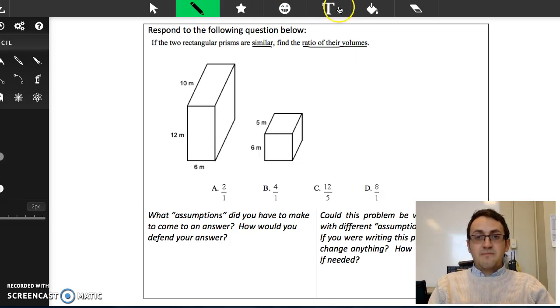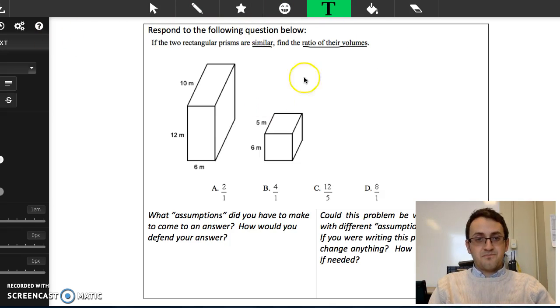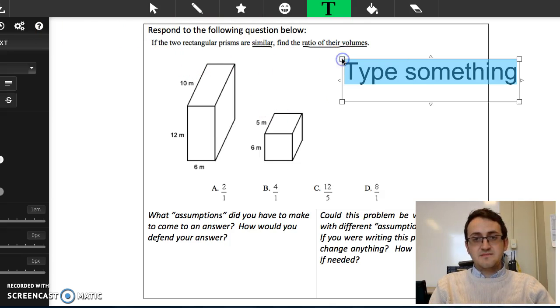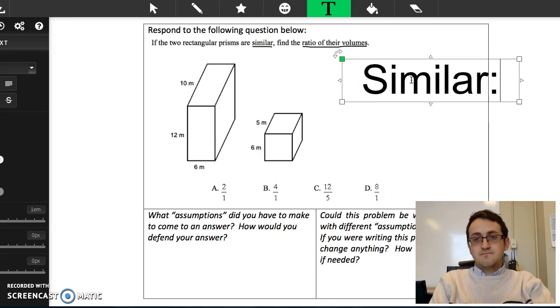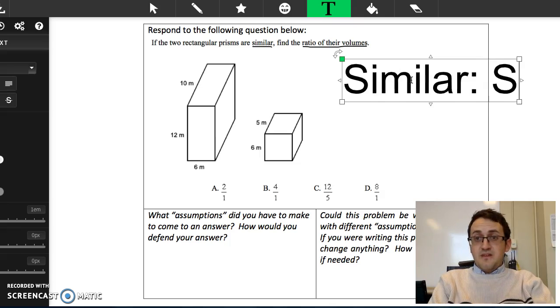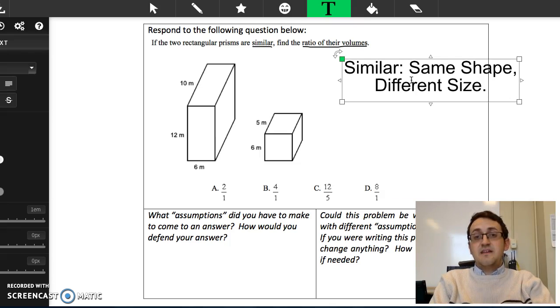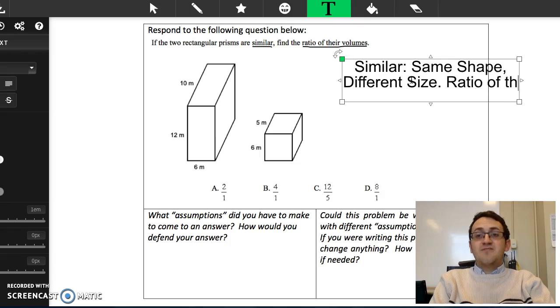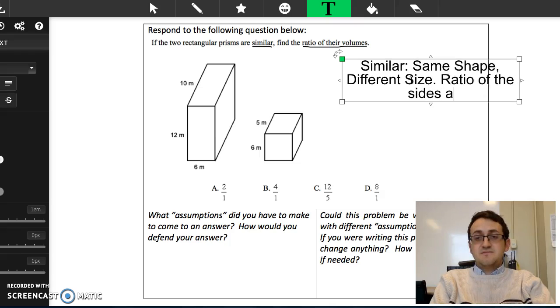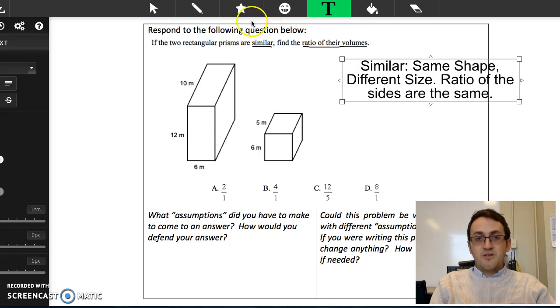Remember, similar means that we have the same shape, different size. Ratio of the sides are the same. So I think that's one thing that we need to be looking at that's pretty important.